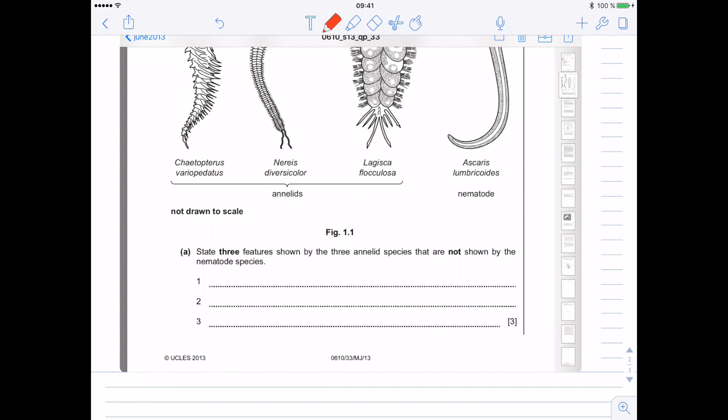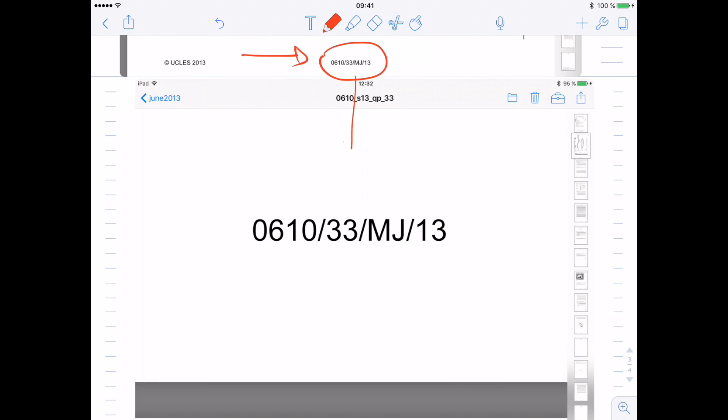Let's assume that you downloaded the past paper and started working with the past paper. One of the most efficient ways of working with past paper is actually working with a marking scheme. How would you find the correct marking scheme for a particular question? Every single question paper down the page has a code.